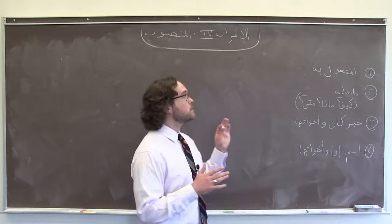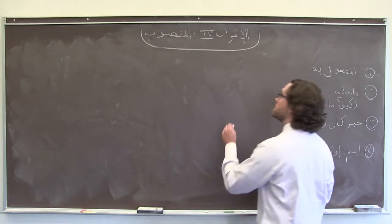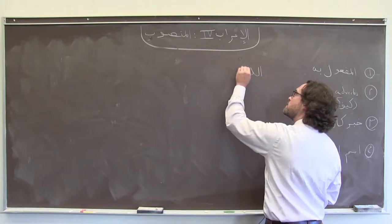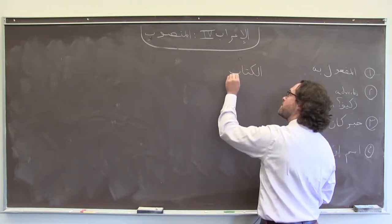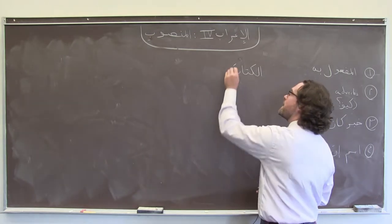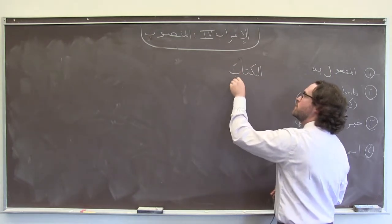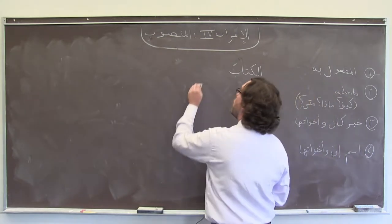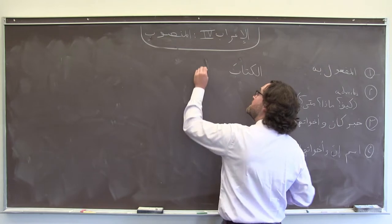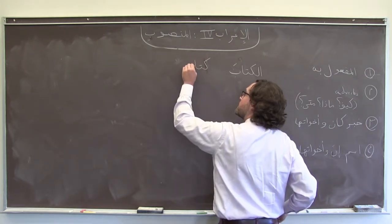On nouns, we'll see منصوب marked in a couple of ways. On singular nouns, we typically see it marked with a فتحة. So الكتاب with a فتحة here, pronounced الكتابَ, or on an indefinite noun with فتحة التنوين.